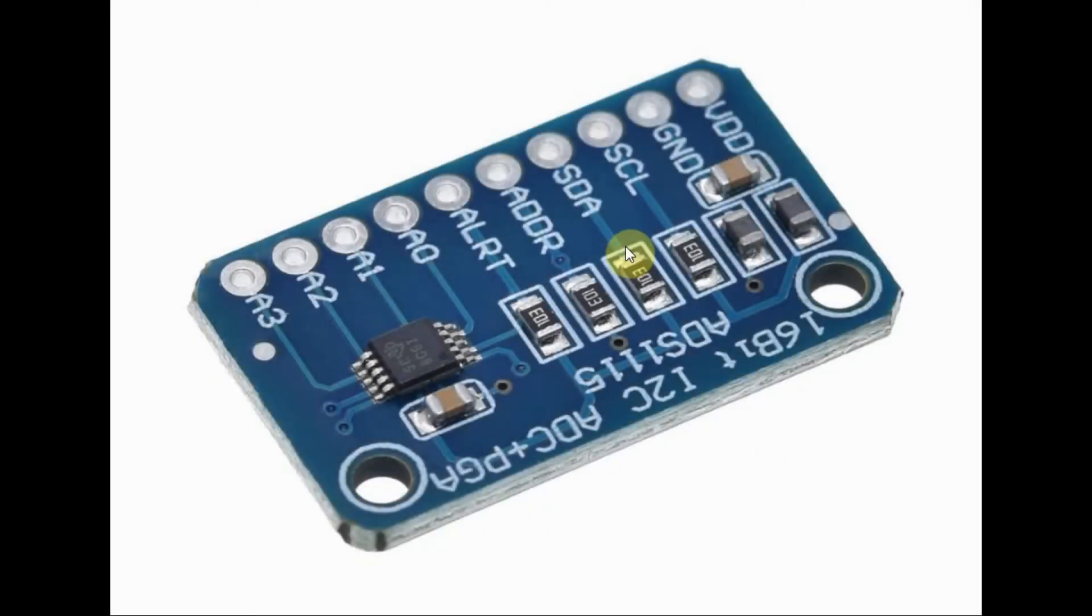This is the ADS-1115 module used in this project, which is interfaced with the Arduino. An analog input will be fed into line A0, and the module will be connected to the Arduino using I2C communication, where the serial clock will be connected to A5 and the serial data will be connected to A4.